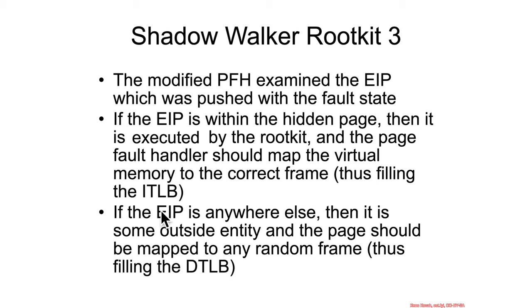How would it determine that? It would have the modified page fault handler examine the EIP that was saved onto the stack — speaking in 32-bit terms because that was the original code, a 32-bit system. So it examines the EIP which is pushed onto the stack, and if the EIP itself is inside of its own code memory range, it knows that it itself is trying to execute itself, and therefore it should have the page fault handler update the page table entry for its particular code to point at the real physical address where its code resides. If instead someone is trying to access this, and the instruction pointer is not within the range of its own code, that means it's some sort of security scanner coming along and trying to read its memory. If this occurs, it's going to map the page table entry to some other garbage piece of memory so that they don't actually get to see the attacker code.